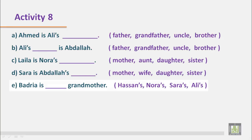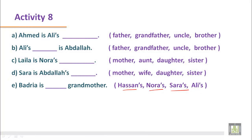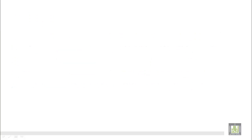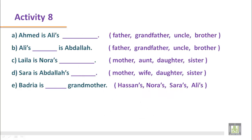Sentence number E: Badriya is someone's grandmother. Whose grandmother is Badriya? Hassan's, Noura's, Sara's, or Ali's? Let's have a look at the family tree. This is Badriya in the family tree, and she is the grandmother of Lila and Ali. So Badriya is Ali's grandmother.